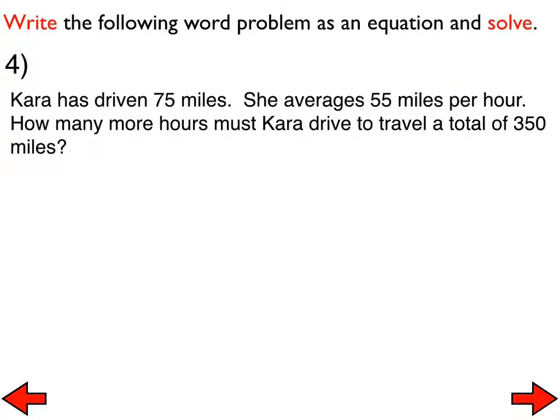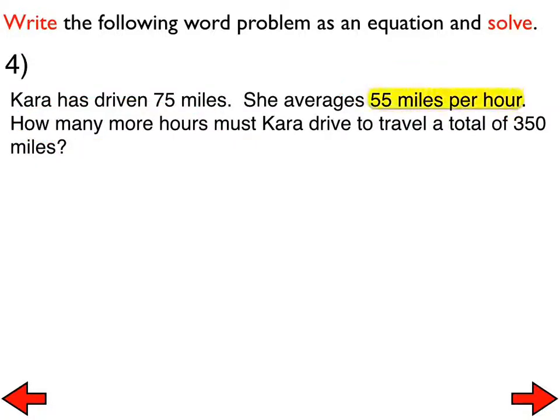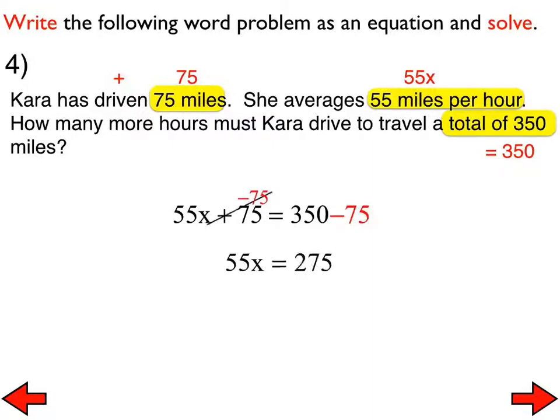All right. Kara has driven 75 miles. She averages 55 miles per hour. At this point, on the fourth problem, you should realize that that 55 miles per hour is going to be very important in this problem. The x might go with the 55. Now I'm going to focus down to what it's asking for. How many more hours? We're looking for how many hours? It's 55 miles per hour. That's an indication that 55 and x will be right next to each other. So equation should look like this. 55x plus 75 equals 350. And we solve that by subtracting 75 from both sides. We then divide both sides by 55. We get x equals 5.